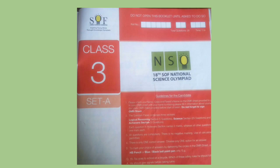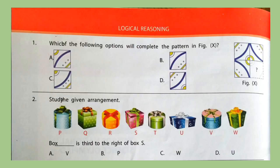Let's start with the first section, Logical Reasoning. Question 1: Which of the following options will complete the pattern in figure X? Figure X is given here. Look at the options carefully and select your answer. Correct answer is option B. Question 2: Study the given arrangement. Box dash is third to the right of box S. You have to find out the third box to the right of box S, and that is box V. So option A is the answer.